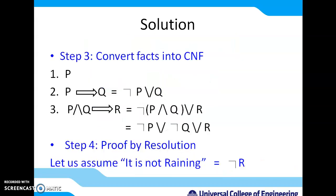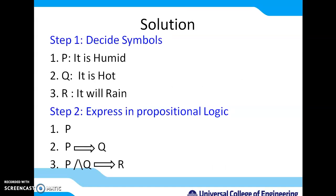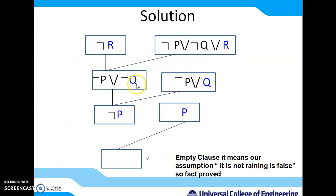To summarize: for a given problem, we first assume symbols for propositional logic — a single symbol is sufficient to represent each fact. We then represent the sentences using propositional logic. Next, we convert to CNF. Finally, we use the resolution method: contradicting facts cancel each other, and if we get an empty clause, the assumed negation is false and the original fact is proved. Please join the query and doubt-solving session after this lecture. Thank you for attending this session on AI/ML techniques.